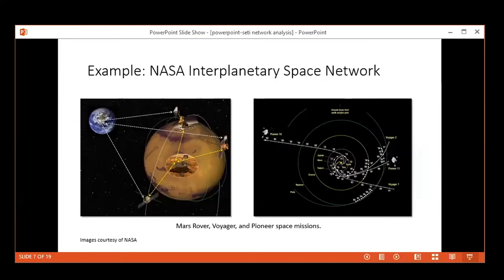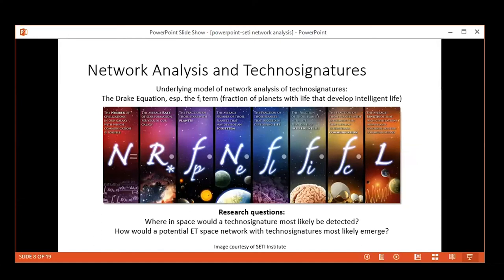I'll talk more about hubs later because that's a key aspect of network analysis. Then we have NASA interplanetary space networks, like with the Mars rover and going back to the Voyager and Pioneer space missions. That image on the right shows a bird's eye view of the solar system. With network analysis, these aren't just radio or communication networks, but also navigation networks—for the Mars rover, you need to know its position. So we're talking not just communication networks for radio signals, but also navigation and non-radio applications.